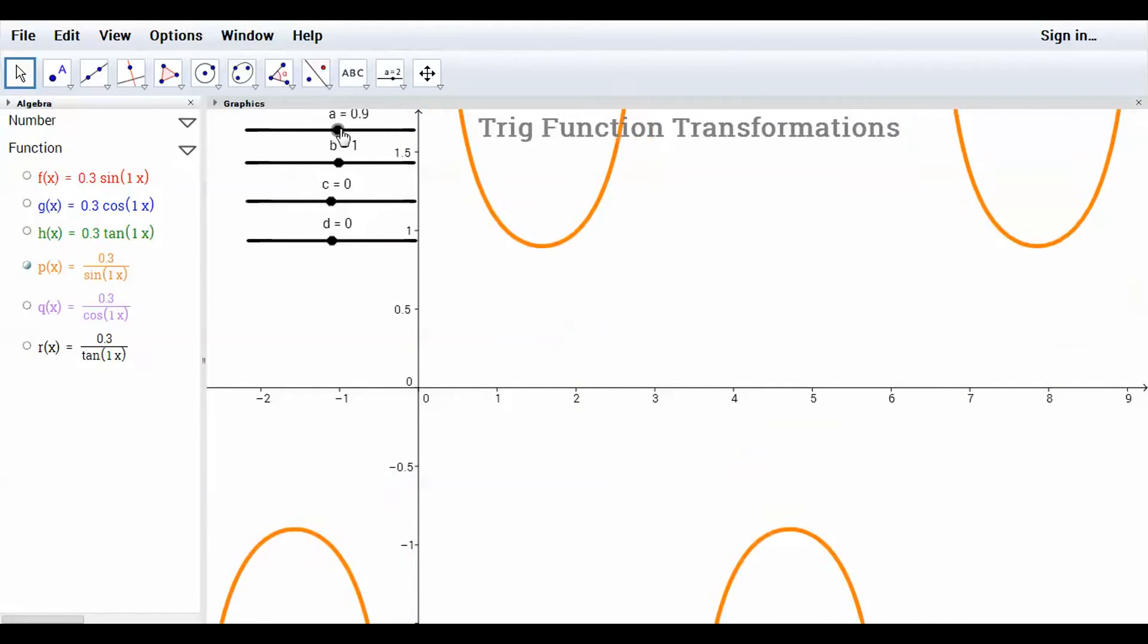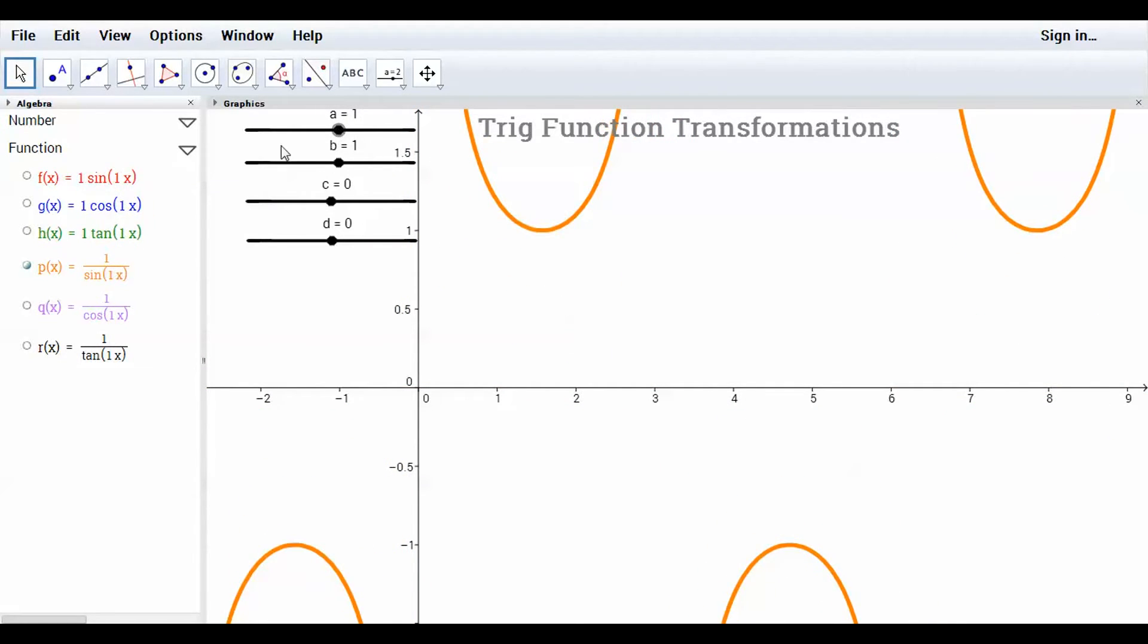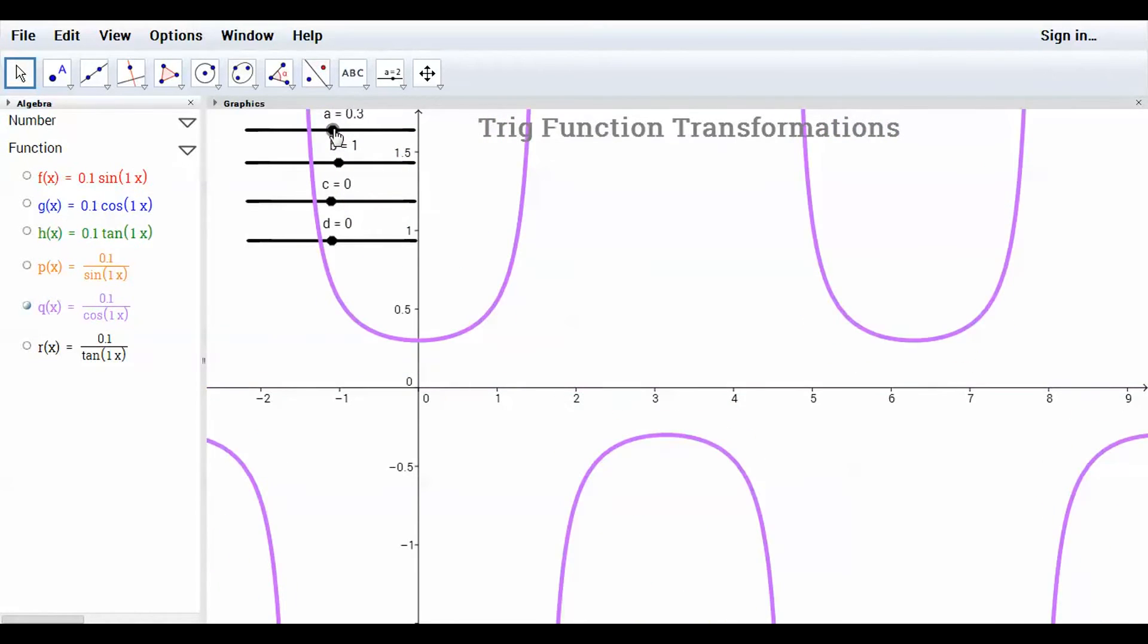So that's kind of interesting. Let me put it back to one, I'll show you secant and cotangent as well. So there's secant. If I change the A value, make it bigger, both top and bottom curves go away from the x-axis. And if I make it a fraction, positive fraction between 0 and 1, it goes between the x-axis and 1.